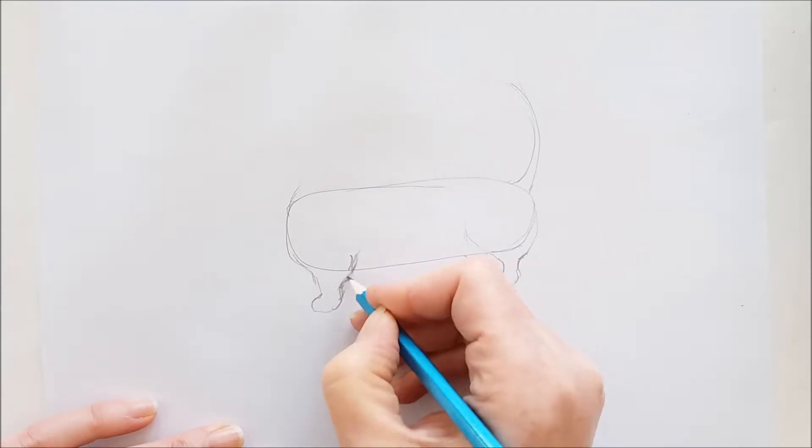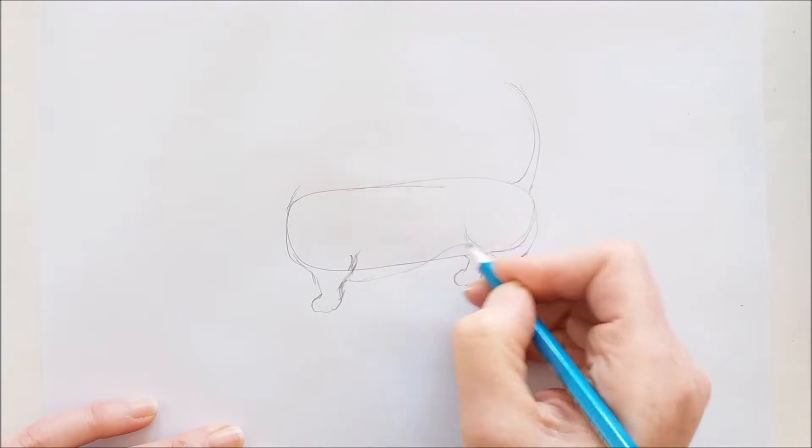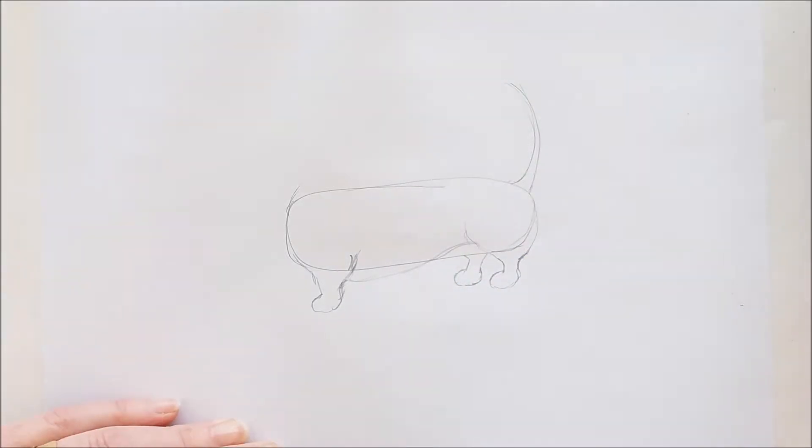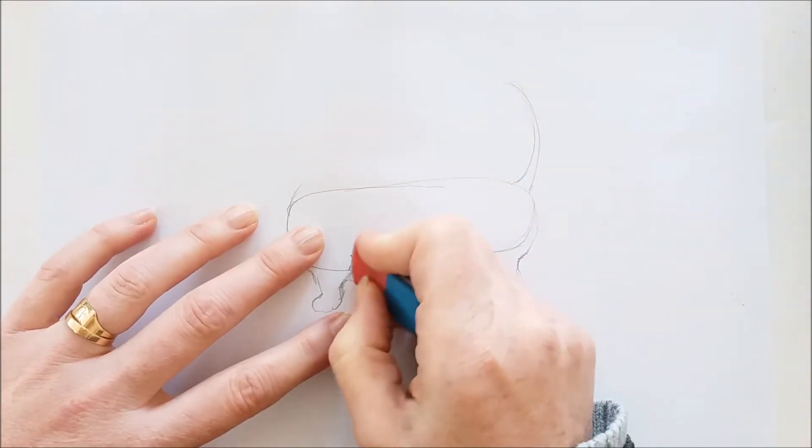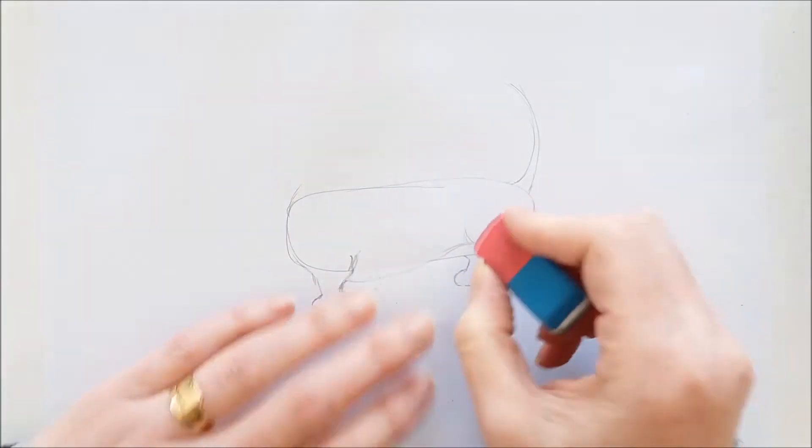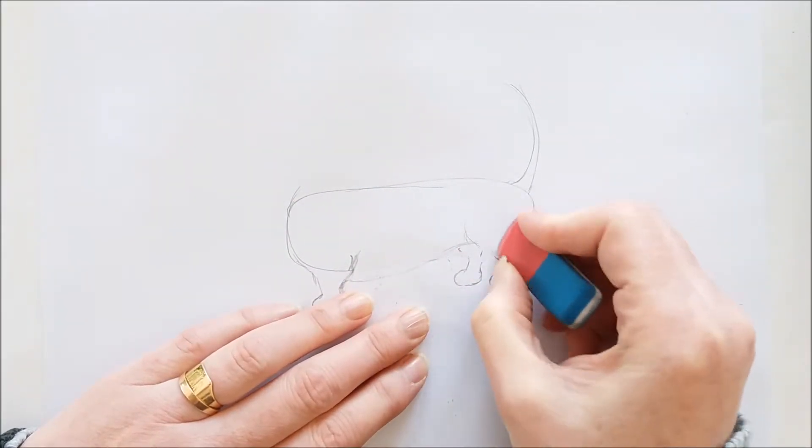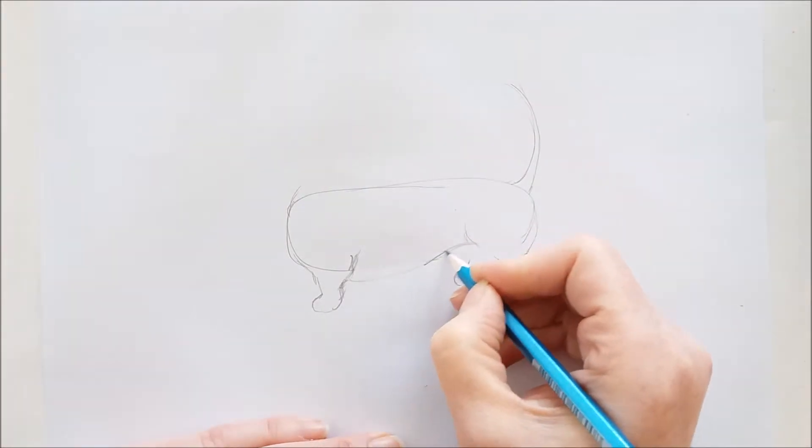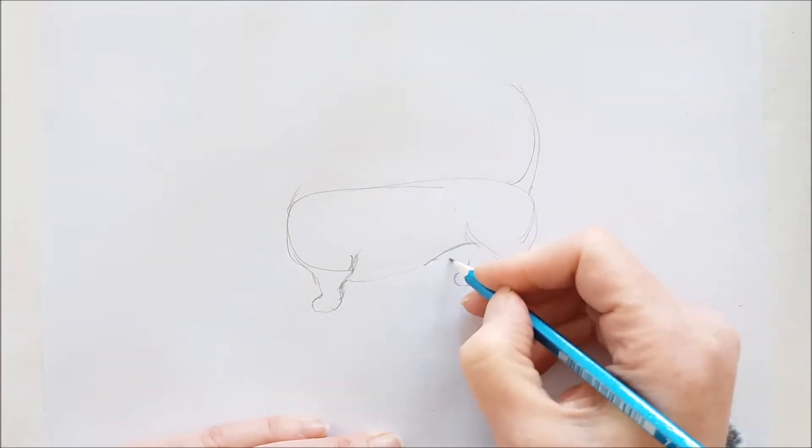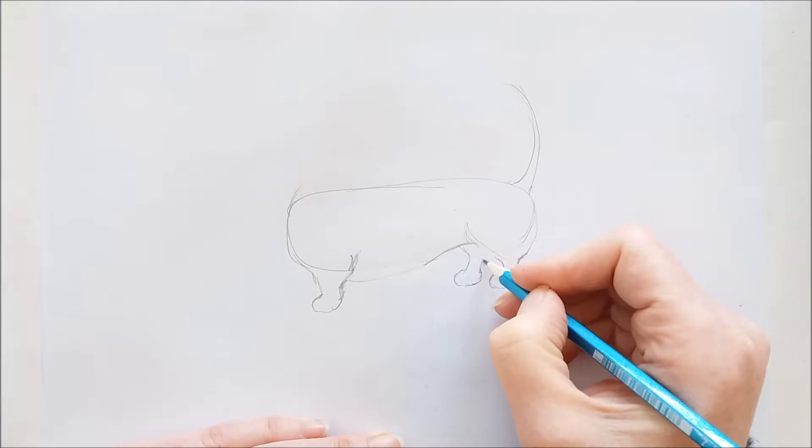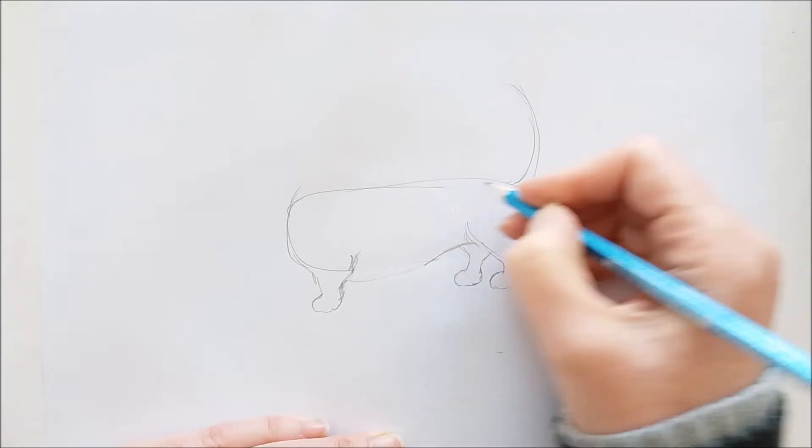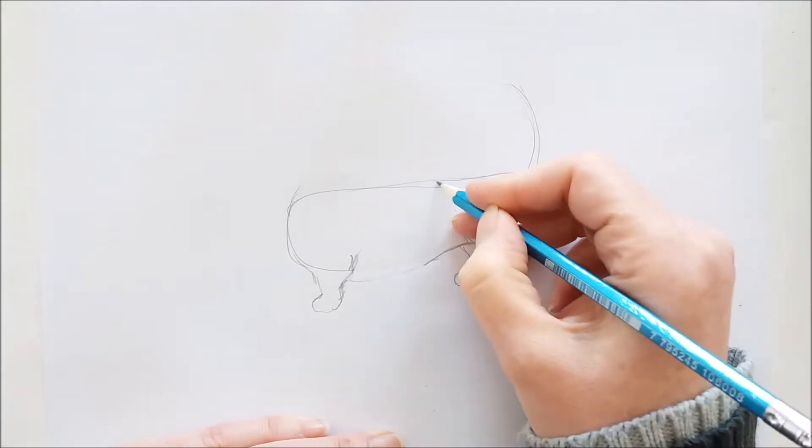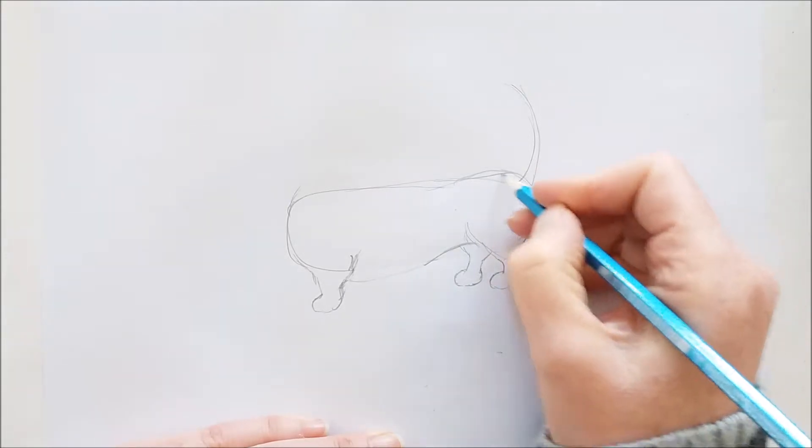Now I'll just go ahead and work a little bit here on the shape of the stomach. And I'll clean up some of these lines that we don't need. I'm just going to give a little curve at the back end here. And then I'll go over the lines on the rear of the dog. And we'll do a little bit of a curve in the middle of the back.